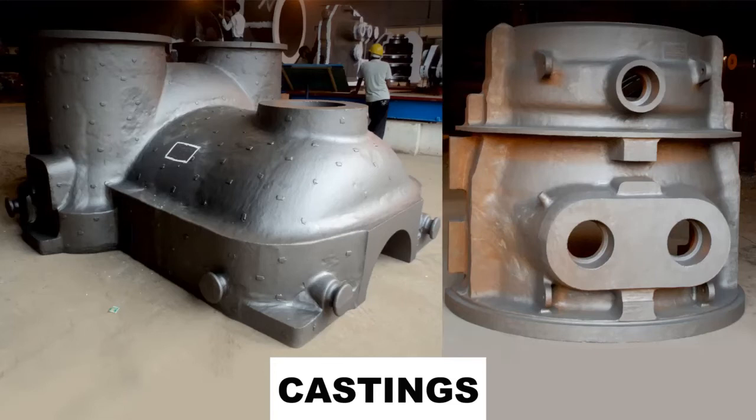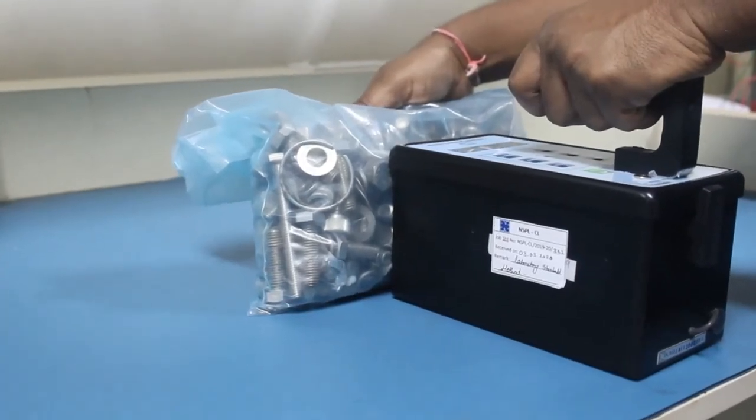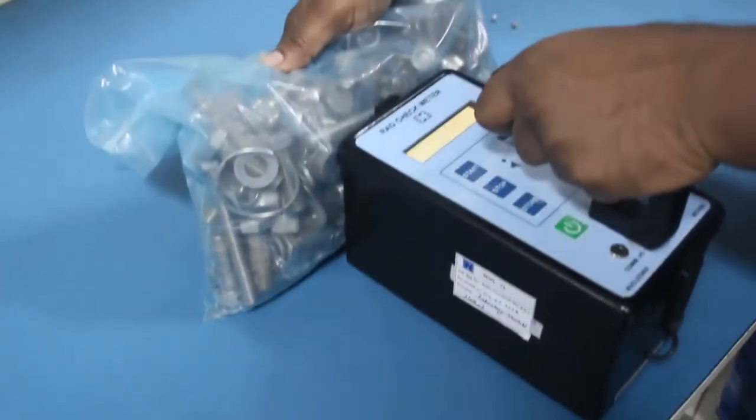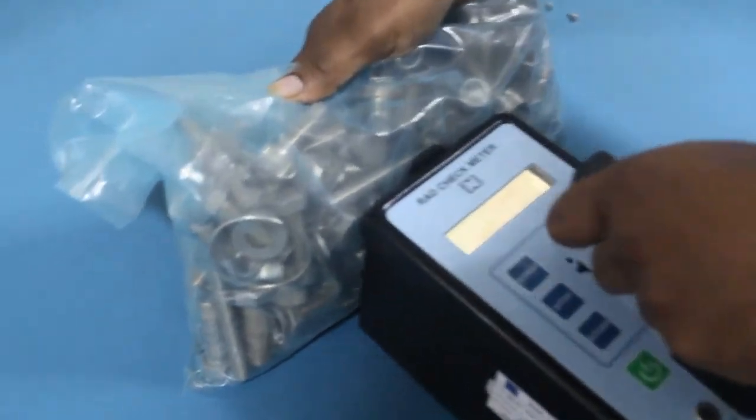2. Castings. We have to choose multiple points all around the casting depending on its size. 3. Smaller components such as small bolts, nuts, nails, wire pieces of different gauges. Take 3-4 kgs in a plastic pouch for measurement.